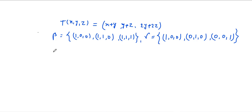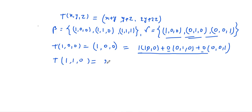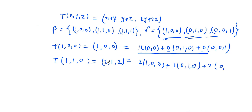For the first basis vector: T(1, 0, 0) = (1+0, 0+0, 0+0) = (1, 0, 0), which expanded along the standard basis is 1·(1,0,0) + 0·(0,1,0) + 0·(0,0,1). For the second basis vector: T(1, 1, 0) = (1+1, 1+0, 2+0) = (2, 1, 2), which expanded along the standard basis is 2·(1,0,0) + 1·(0,1,0) + 2·(0,0,1).